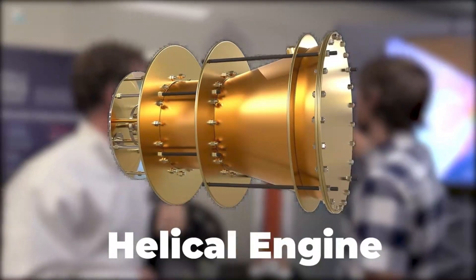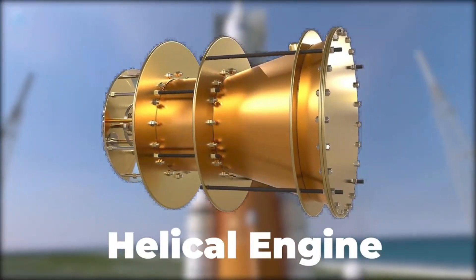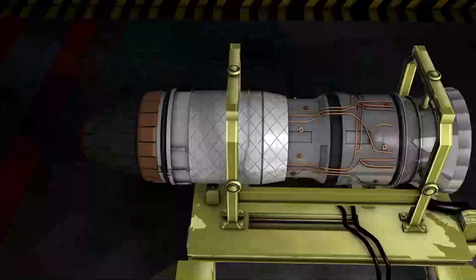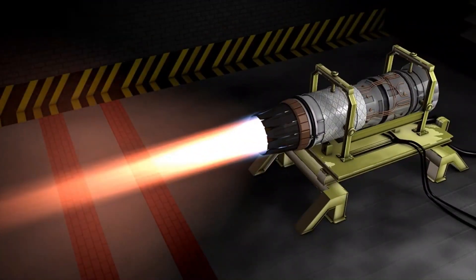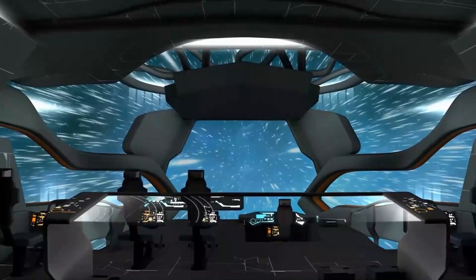He's named it the Helical Engine and published it on NASA's Technical Reports server. On paper, it works by exploiting how mass can change at relativistic speeds close to the speed of light in a vacuum. It has not yet been evaluated by a professional.